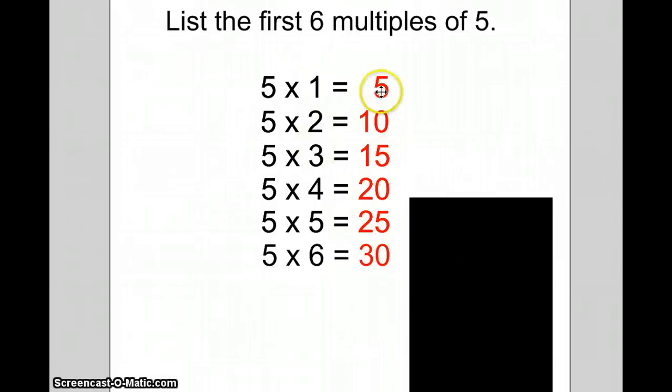When you look at your list, all of these red numbers on the right represent the first six multiples of 5.